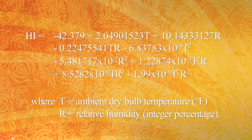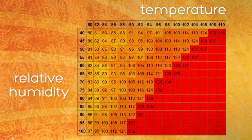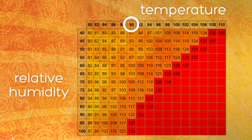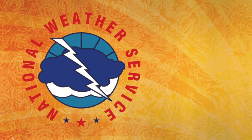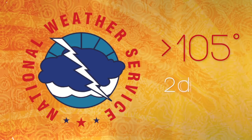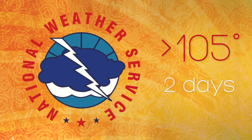The heat index was developed from a mathematical formula. We usually see this as a chart. For example, with an actual temperature of 90 degrees Fahrenheit coupled with a relative humidity of 60%, this creates a heat index of 100 degrees. The National Weather Service issues alerts when the heat index is expected to exceed 105 degrees for two consecutive days. The heat index should be used as a guide when planning outdoor summer activities.